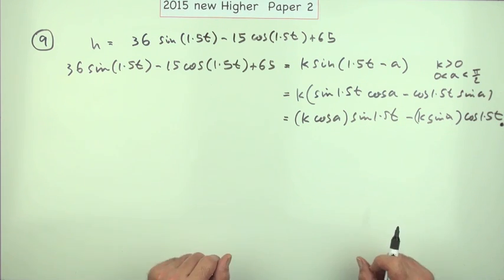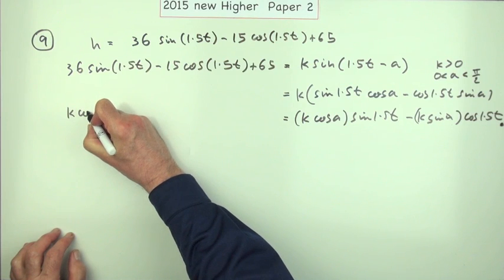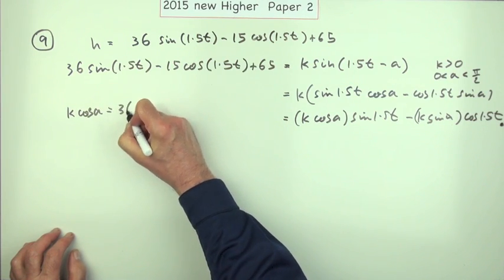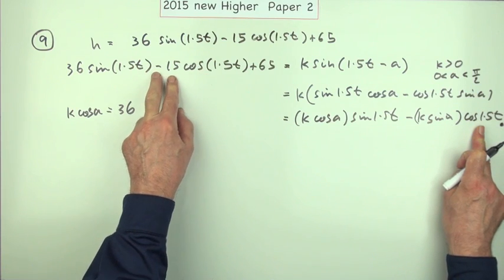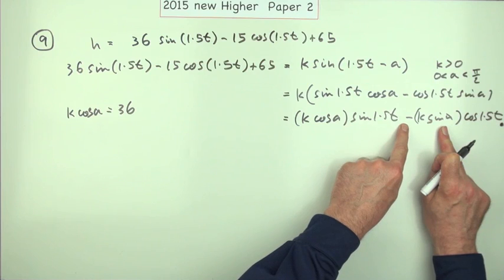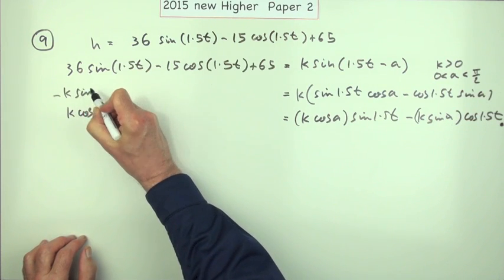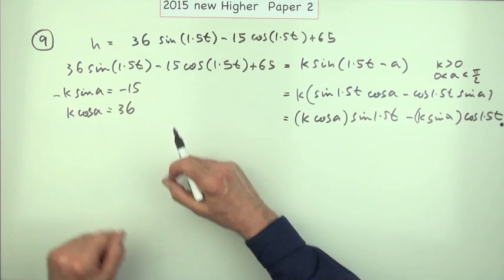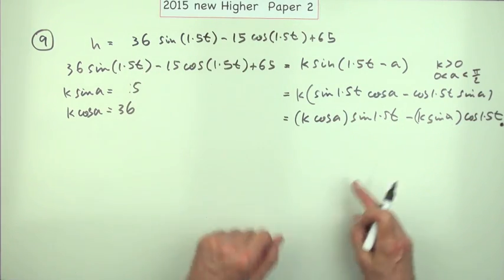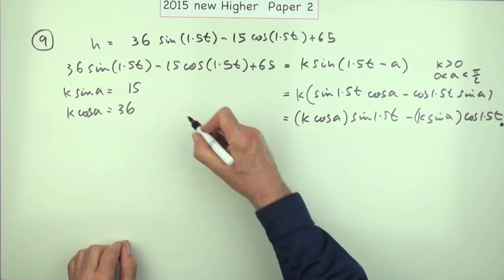That makes it quite clear how they'd be compared. For the sine 1.5t term, K cos A must equal 36, so I'll put that down: K cos A = 36. And for the cos 1.5t term, I've got a negative 15, and this has a negative K sin A. So negative K sin A equals negative 15, which means K sin A = 15. Both of these have to be stated — that's the second mark.